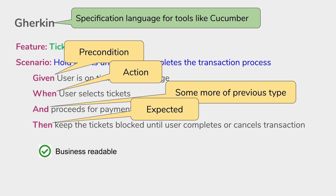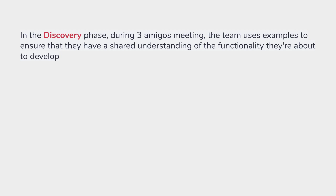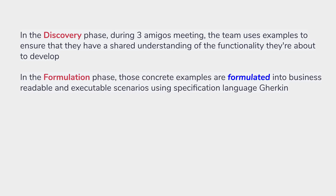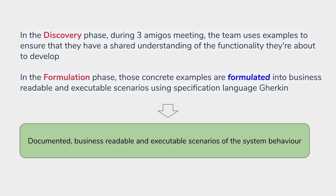The ticket should be blocked until the user completes or cancels the transaction. This scenario or documented example is business readable — any business person can read and understand it. It is also executable: the same scenario can be used by BDD tools like Cucumber to create automation tests, and the same scenarios can also guide development.